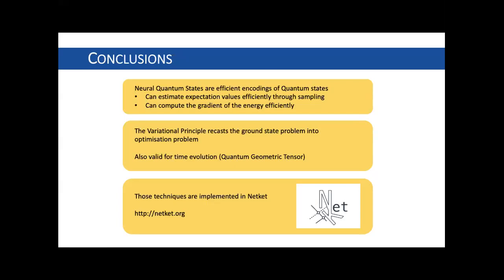Q&A: Can stochastic gradient descent find saddle points of an energy landscape? In general, stochastic gradient descent goes downhill and will not stop at a saddle point. Saddle points slow down optimization, but in general we are trying to find the ground state — not a saddle point — and a saddle point in the variational parameter space doesn't have a direct physical meaning.